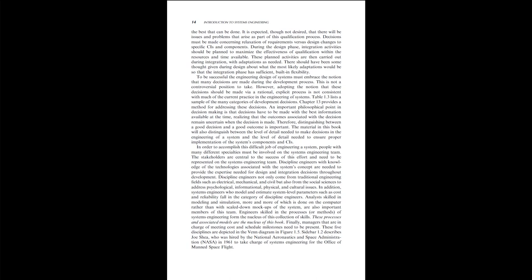To be successful, the engineering design of systems must embrace the notion that many decisions are made during the development process. Adopting the notion that these decisions should be made via rational, explicit process is not consistent with much of the current practice in the engineering of systems. Table 1.3 lists a sample of the many categories of development decisions. An important philosophical point in decision-making is that decisions have to be made with the best information available at the time, realizing that the outcomes associated with the decision remain uncertain when the decision is made. Therefore, distinguishing between a good decision and a good outcome is important.